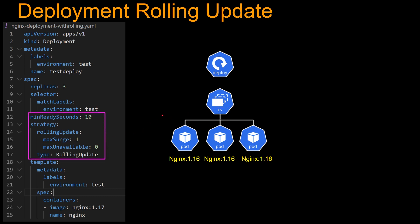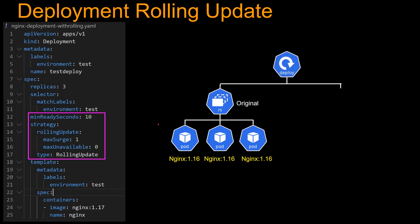Now let's take a look at this section of the manifest file — it defines how you can upgrade your pods. Let's say you are running Nginx version 1.16 in these pods. If I make a change and upgrade the image from Nginx 1.16 to version 1.17, this highlighted section defines how the pods will be upgraded. This max surge 1 defines how many pods it can go above the defined replicas during a rolling update. So when you apply this manifest file, the deployment will create another replica set and start managing it, and a new pod will come up with Nginx version 1.17.